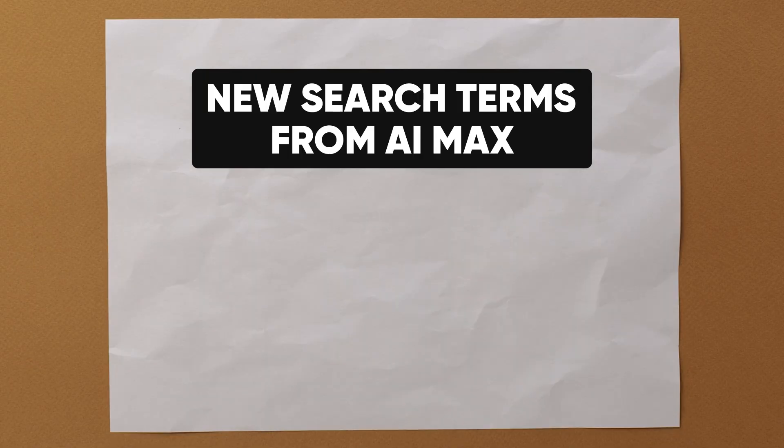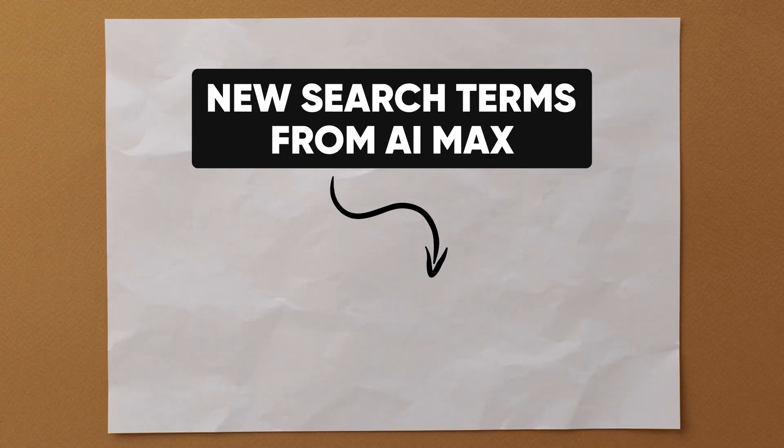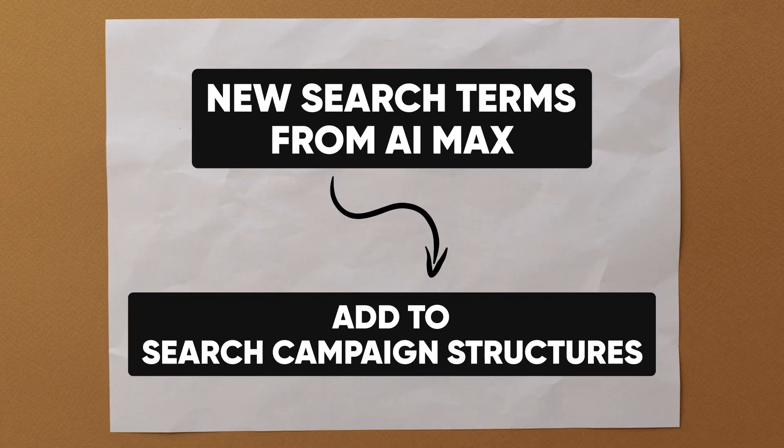Let it run for a few weeks, see what the data shows, and reassess after having lots of click data. Try to let it learn and calibrate itself because on accounts where it does work, the first week or two are choppy and then it seems to get going. Then take those search terms that AI Max was picking up that you weren't bidding on and actually start building those into your search campaign structures - adding keywords to ad groups or building new ad groups based on the themes those search terms match.